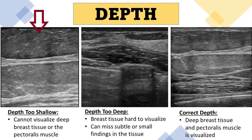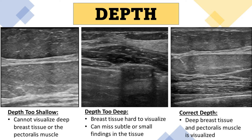In the first image, the depth is too shallow — you cannot visualize the deep breast tissue or the pectoralis muscle. In the next image, the depth is too deep; the breast tissue is hard to visualize because it's so far away and small, making it easy to miss subtle or small findings. In the last image, the depth is set correctly — you can visualize both the deep breast tissue and the pectoralis muscle.